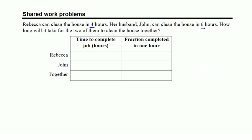What we're going to do is fill in this table with time to complete job in hours and fraction of the job that is completed in one hour. Rebecca takes four hours to complete the job, and John takes six hours. And together we don't know, so that's where we're going to put in our variable.